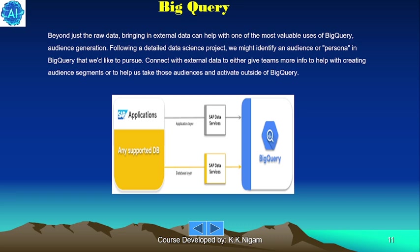Following a detailed data science project, you might identify an audience or persona in BigQuery that you would like to pursue. You can connect with external data to give teams more information for creating audience segments, or to help activate those audiences outside of BigQuery.